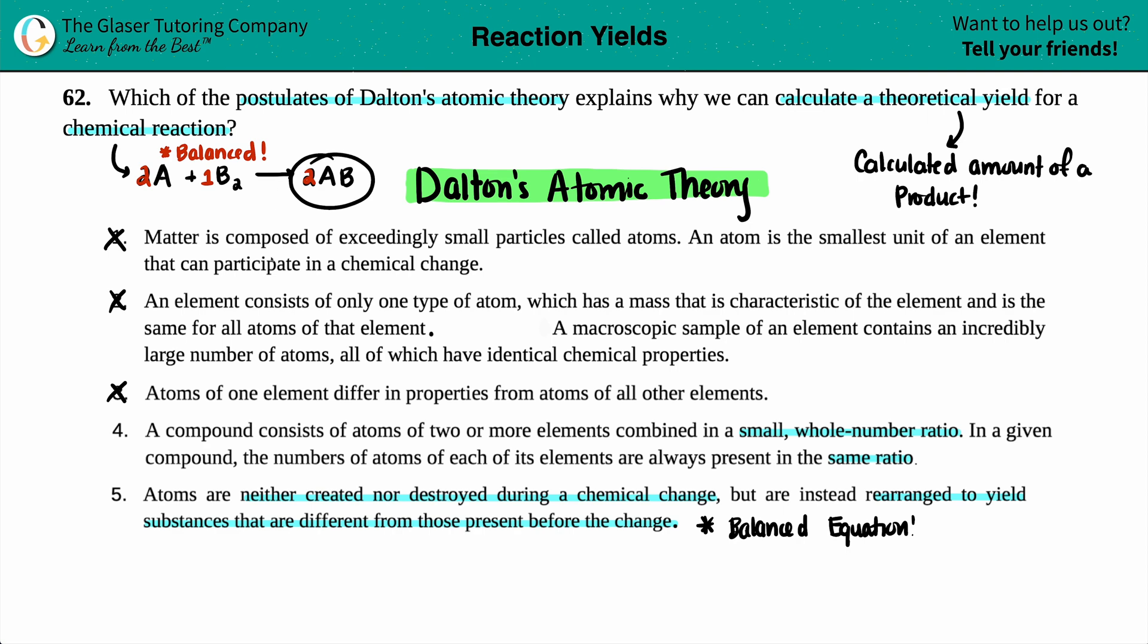If you got two B's, you gotta have two B's on the other side as well. Nothing is created nor destroyed. And you're yielding - theoretical yield is a fancy way for just saying produce.